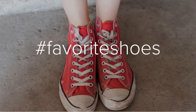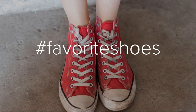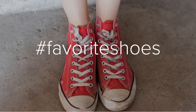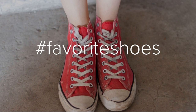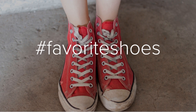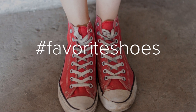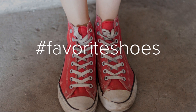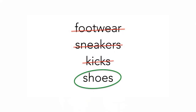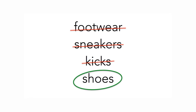Some organizational structures are informal and may include user-generated categories like tags — the category names you might use for posts on a personal blog — or hashtags, the category names you find on social media. Some organizational structures are more formal and make use of controlled vocabulary that consistently uses the same term to describe the same category of information, making it easier to find.